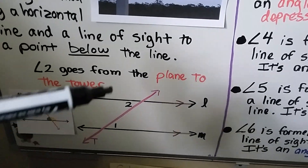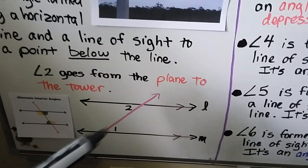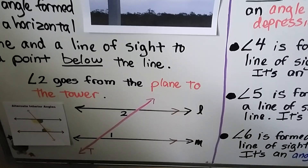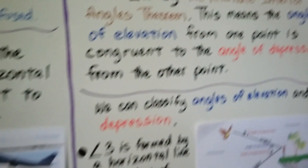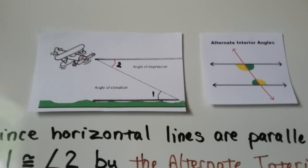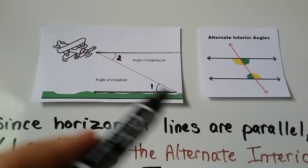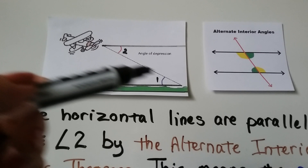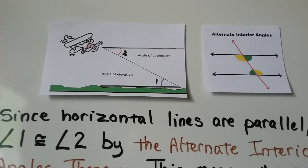We can see we have two horizontal lines that are parallel, so the line of sight is a transversal. Angle 2 is going to be congruent to angle 1 because they're alternate interior angles. The line of sight from the plane to the ground is the transversal cutting through the two horizontal parallel lines, so angle 1 and angle 2 are congruent to each other.